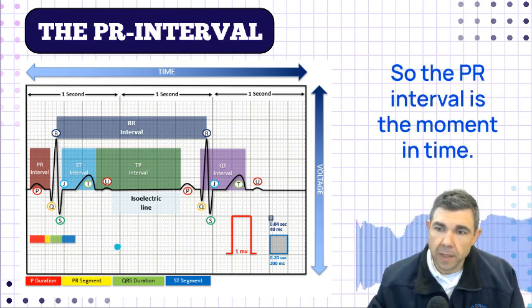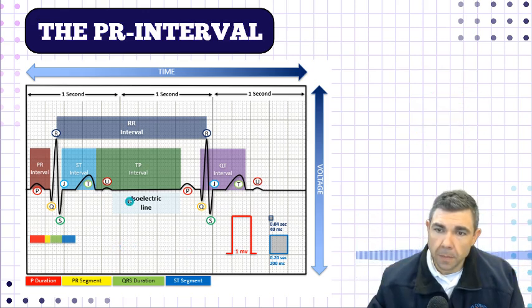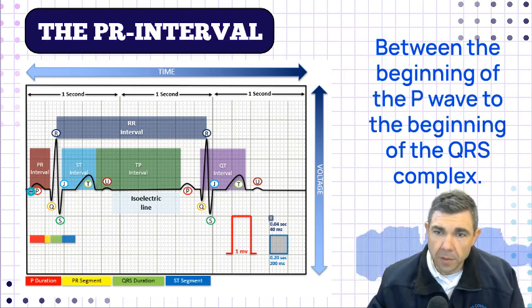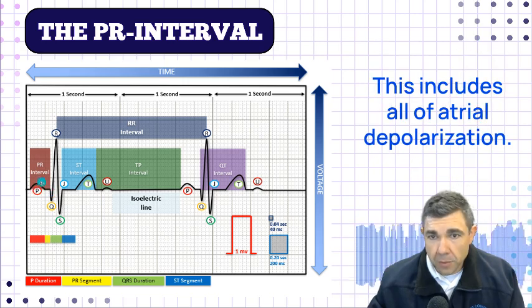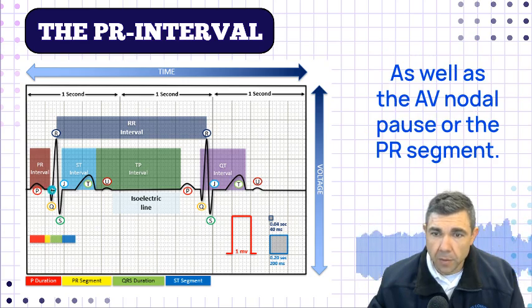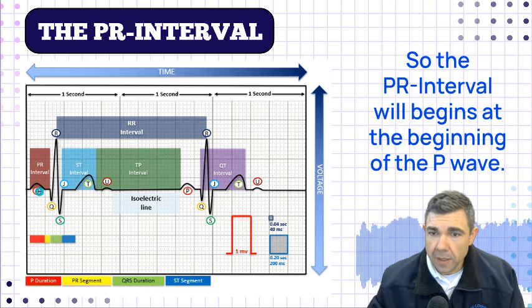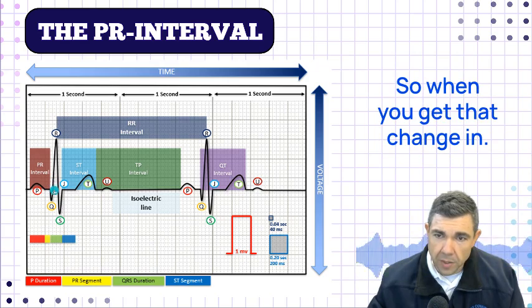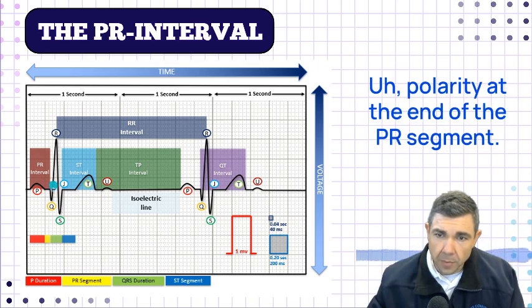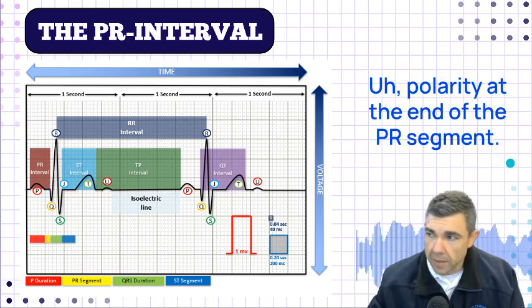The PR interval is the moment in time between the beginning of the P wave to the beginning of the QRS complex. This includes all of atrial depolarization as well as the AV nodal pause or the PR segment. The PR interval begins at the beginning of the P wave and ends at the very beginning of the QRS complex, when you get that change in polarity at the end of the PR segment.